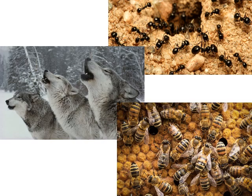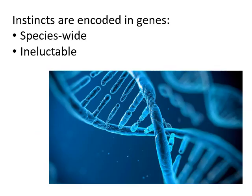In the animal kingdom, this kind of social order is ensured by instinct. These instincts are encoded in the genes. For the purposes of this class, let's define instincts as something that is species-wide — shared by every member of the species. These instincts are ineluctable; there's nothing you can do about instinctual behavior. The genetic instinct mandates the way that you will behave, and that is how social animals maintain order. The social behaviors they engage in are literally written on their DNA.